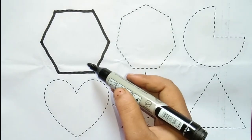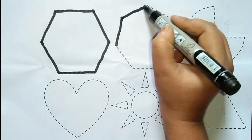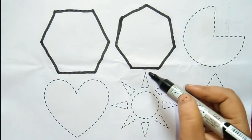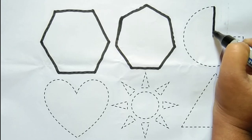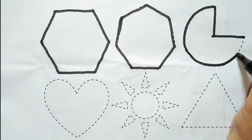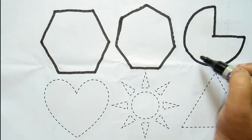This is hexagon. This is heptagon. This is partial circle.